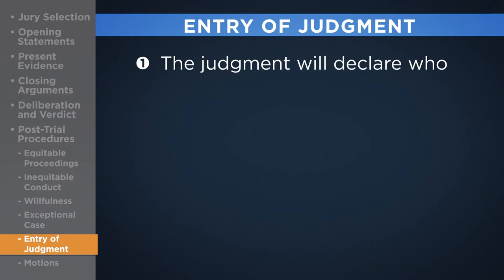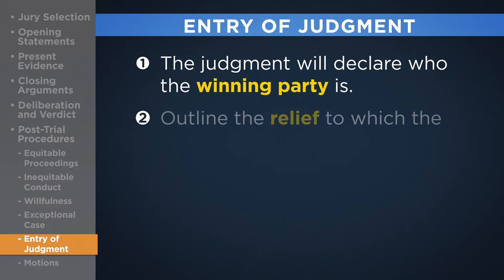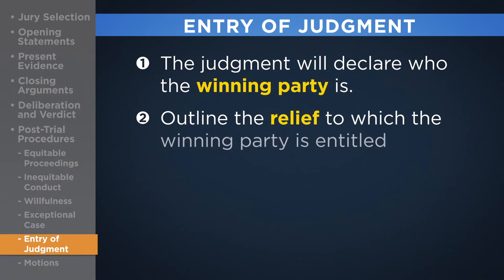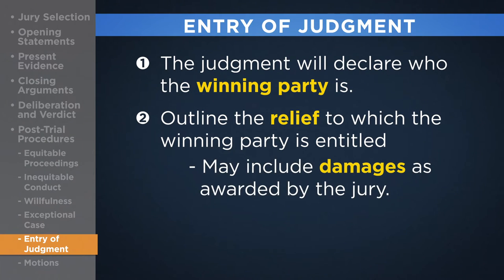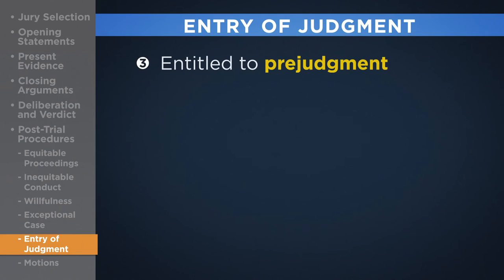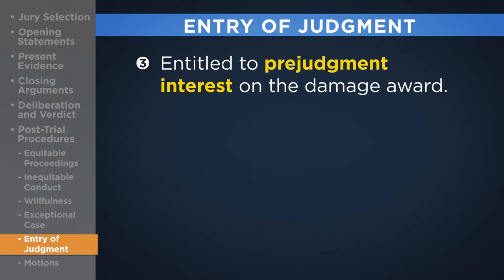First, the judgment will declare who the winning party is, then clearly outline the relief to which the winning party is entitled. The relief may include damages as awarded by the jury. Damages are sometimes supplemented by the court if more damages have accrued since the jury calculated them. A winning patentee is also entitled to pre-judgment interest on the damage award, calculated at the rate specified by law, to compensate for the time value of money lost due to the delay in obtaining damages.